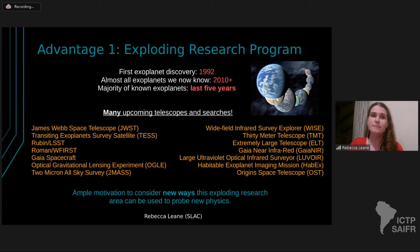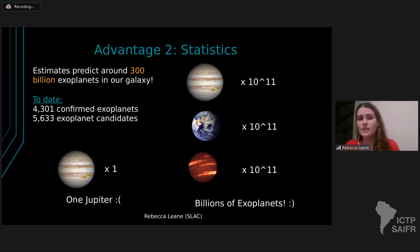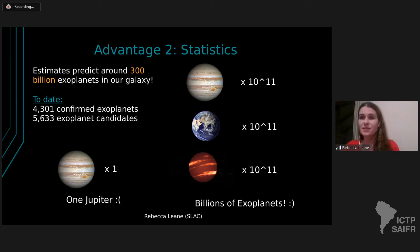The second advantage is statistics. We think there are about 300 billion exoplanets in our galaxy, which is a really big number. Even a tiny fraction of hundreds of billions will give us fantastic statistics to understand whether there's really a dark matter signal or just some systematic we don't properly understand. Today we've found nearly 5,000 confirmed exoplanets and about an additional 5,000 candidates. Compared to using just Jupiter — one data point — we can instead use large catalogs of exoplanets to look for something anomalous.